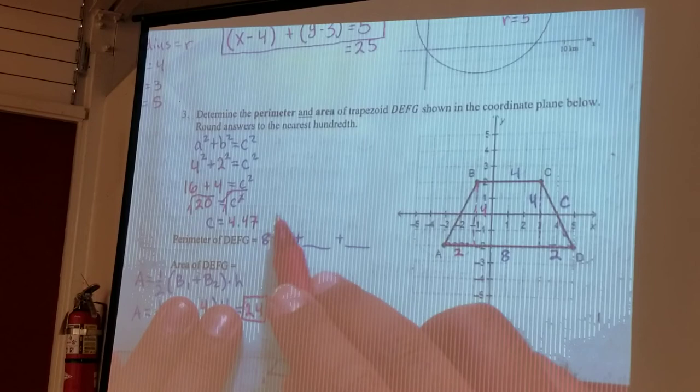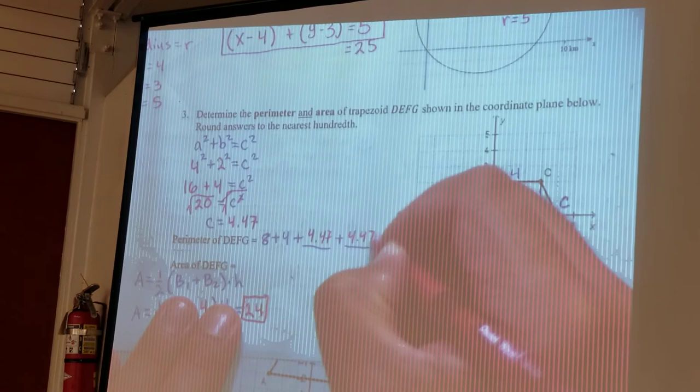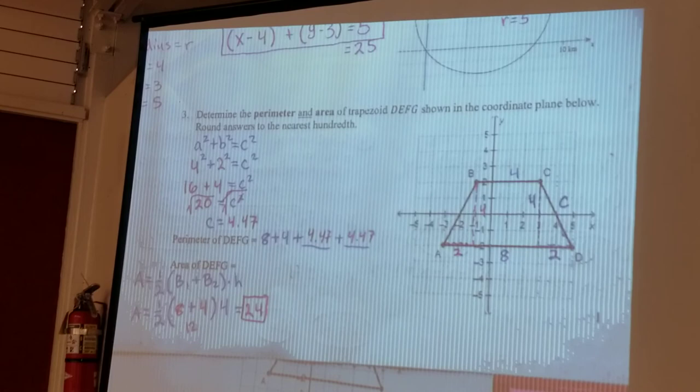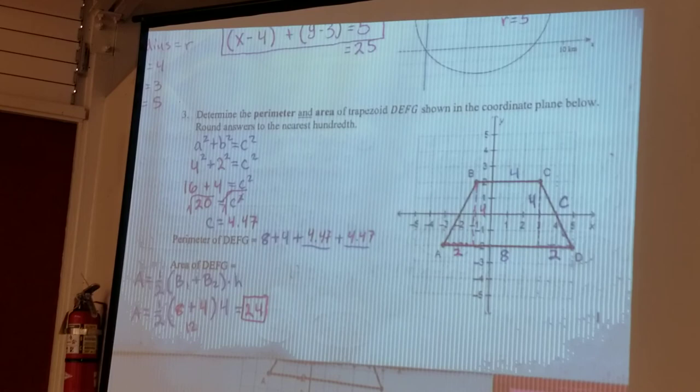So I can add up all four sides of my trapezoid, and 4.47 plus 4.47 plus 4 plus 8 is going to equal to 20.94 as my perimeter, and then you're done.